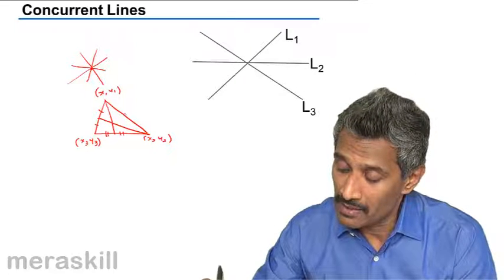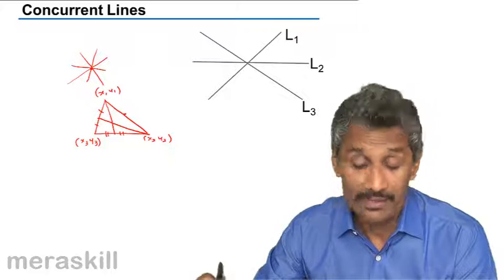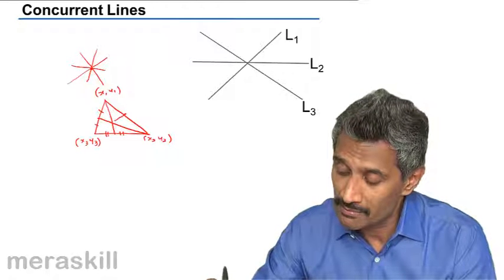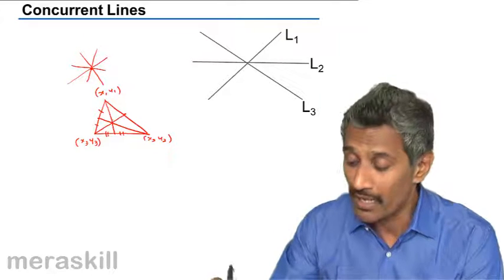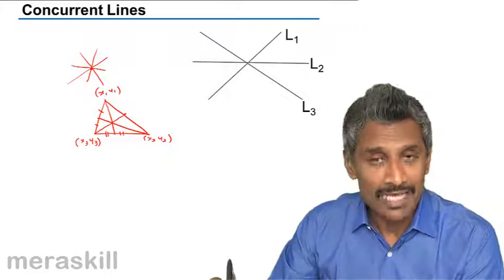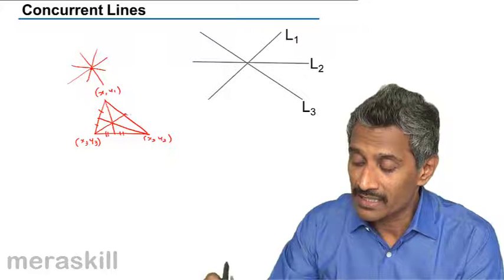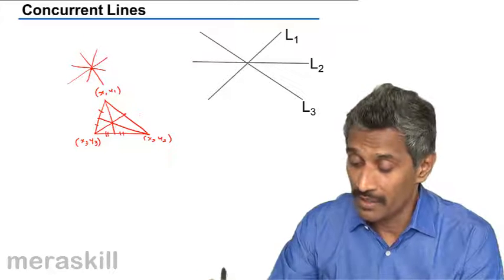The third median would be joining this and this. It will be observed that this third median also passes through the same point of intersection.